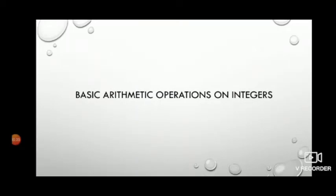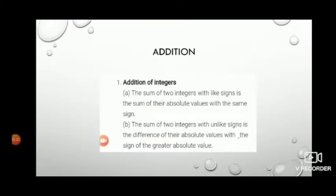Here we will see basic arithmetic operations on integers. The first one is addition. When we are doing addition of integers: if both numbers have the same sign, we add them and the result gets the same sign. If both numbers have a different sign, we subtract the smaller number from the bigger number.